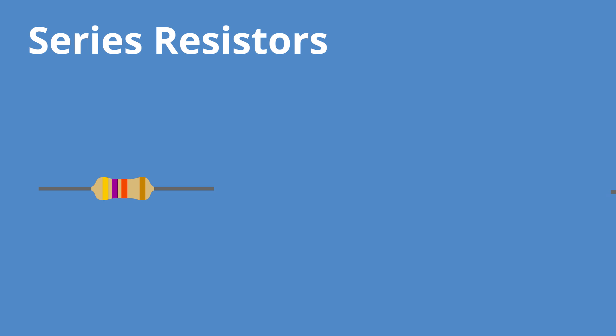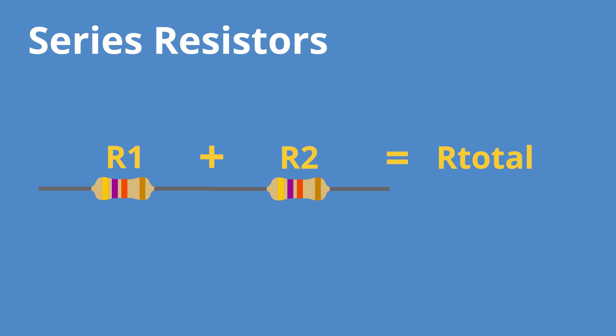One of the most simple but necessary things you'll need to do with resistors is add them together, and there are two main ways to do that: in series and in parallel. When adding resistors in series, you basically just put them end to end — R1 plus R2 equals your total resistance. So R-total equals R1 plus R2.